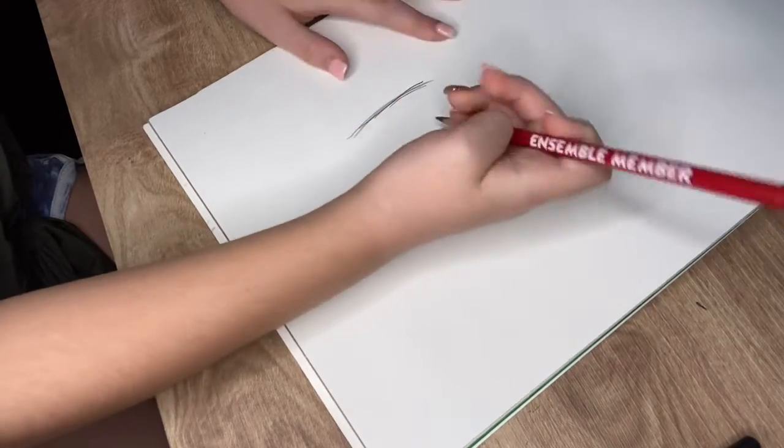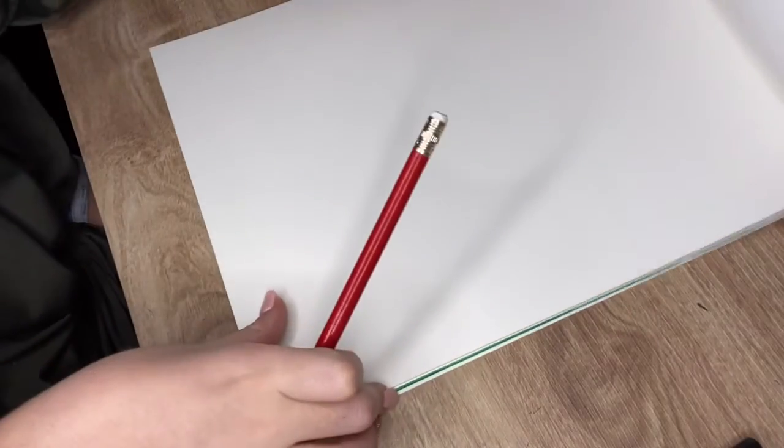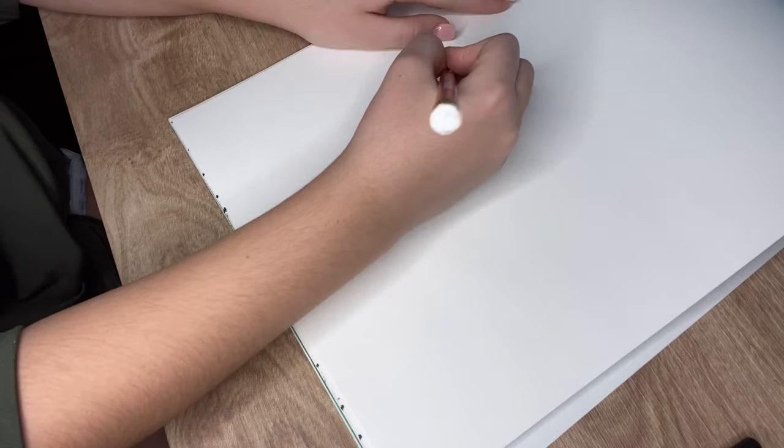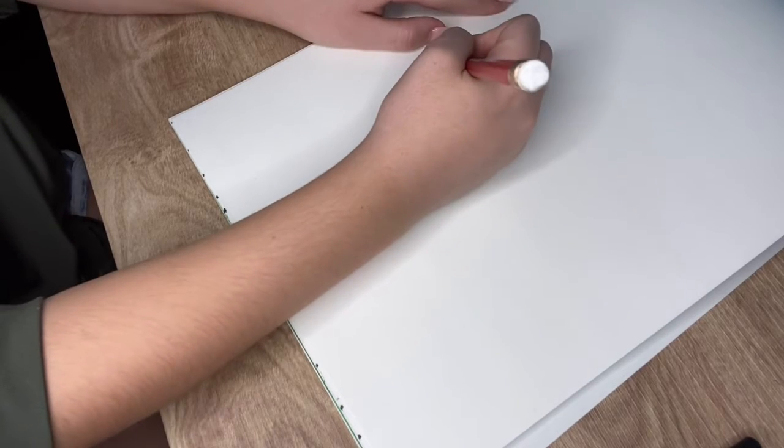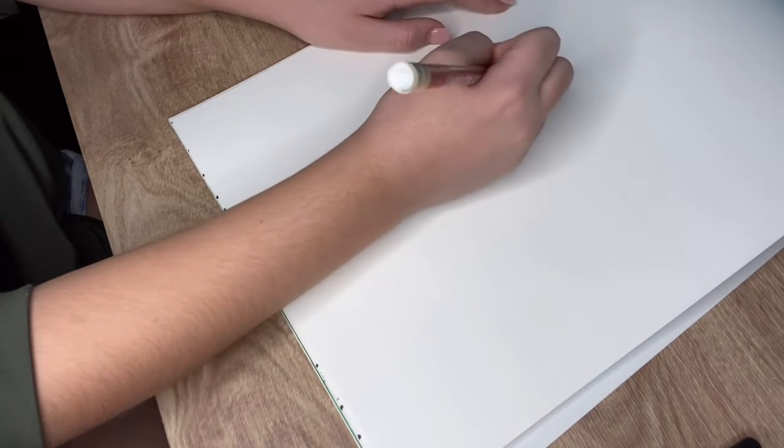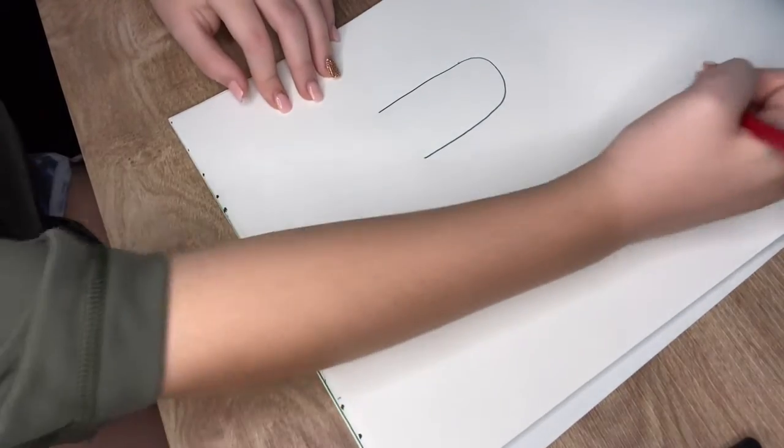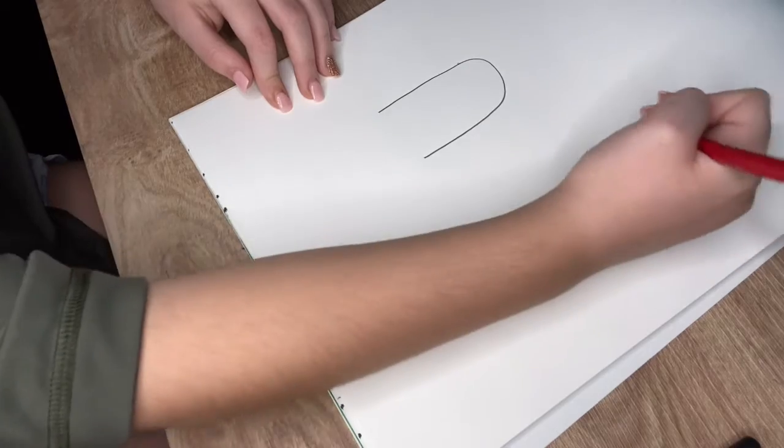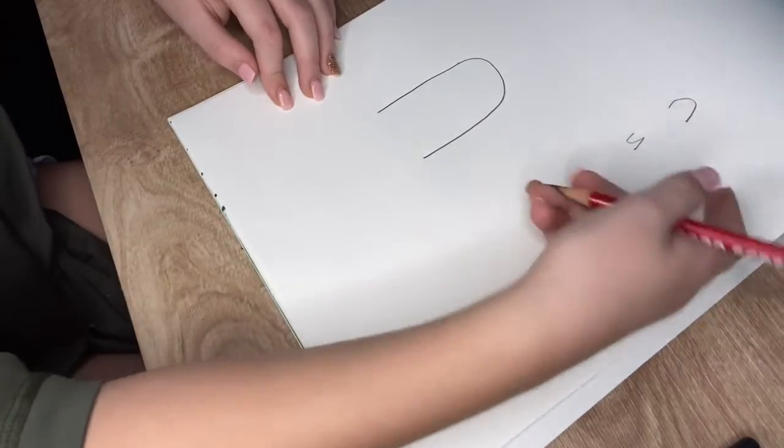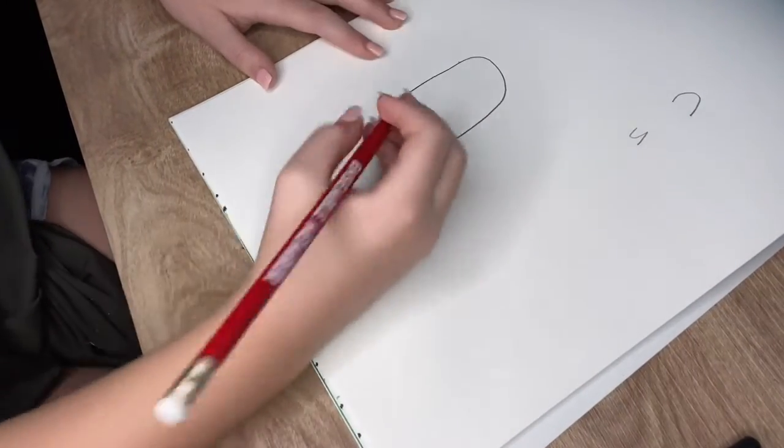You're gonna start with a straight line and then you're going to take the top of that line and curve it so you get a U. Do a U and then flip your page over but a really big one.